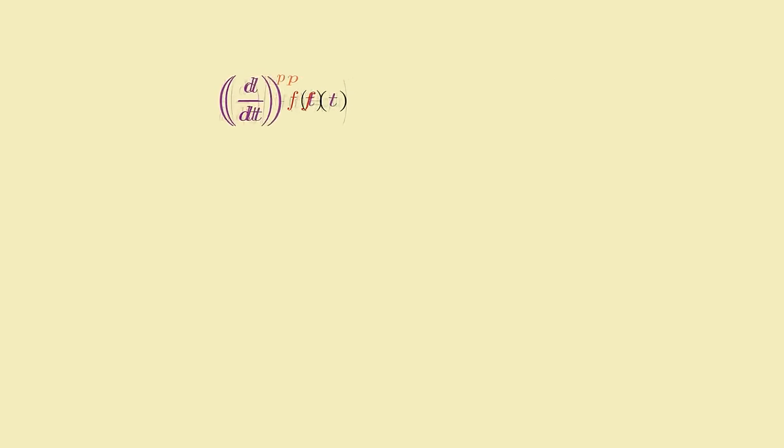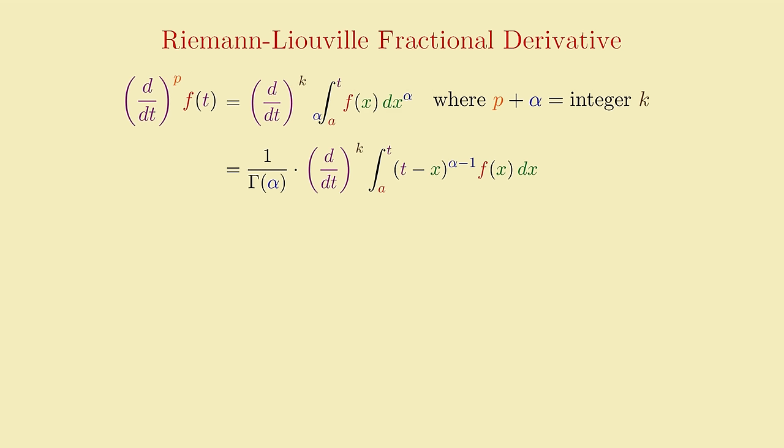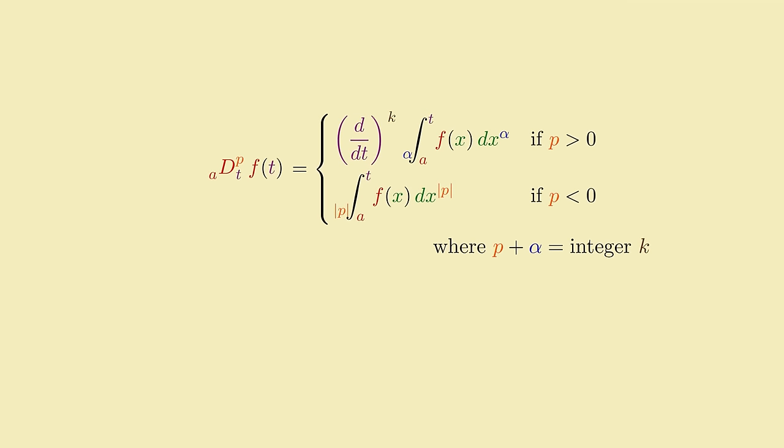And using the same trick we can generalize this to any fractional order. To take the fractional derivative of any order p, first take a fractional integral of order alpha, where you choose alpha so that the sum of p and alpha is an integer k. Then take k many ordinary derivatives to get the effective integral order down to negative p. This technique for computing a fractional derivative is called the Riemann-Liouville fractional derivative. And for shorthand, we depict it like this, where p denotes the order of the derivative, and a is the lower bound of the fractional integral piece.